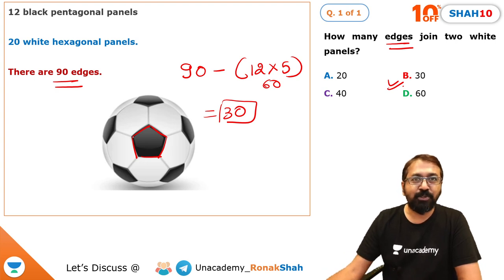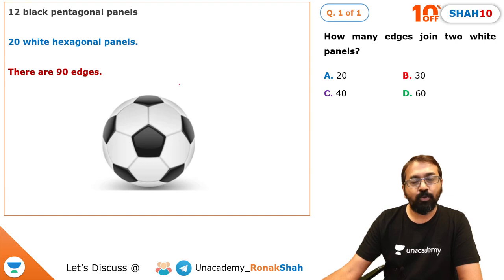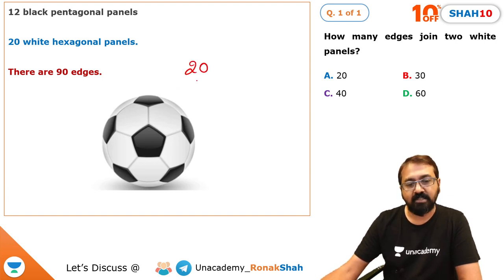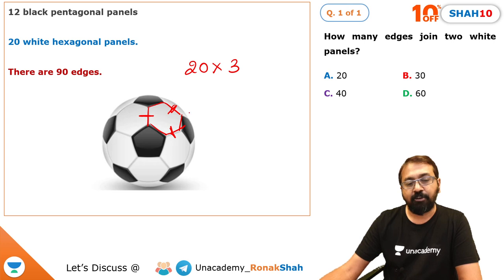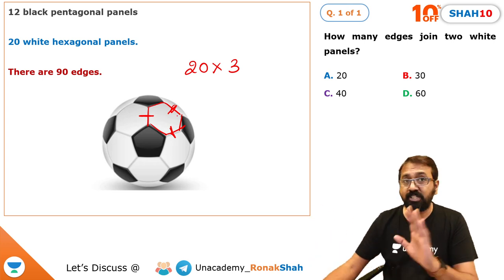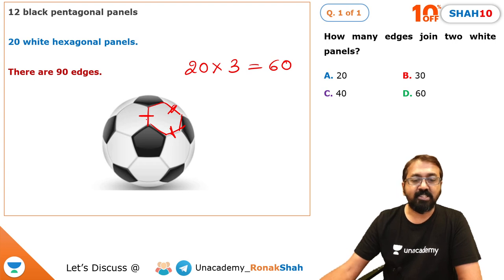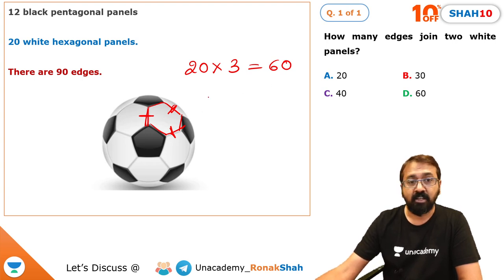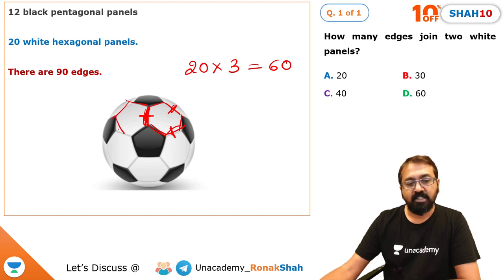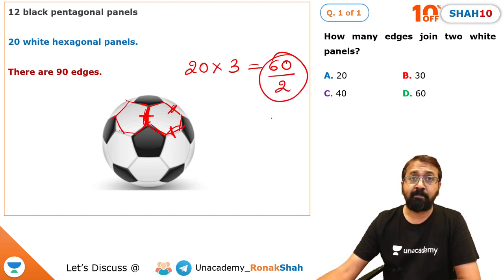The second approach: there are 20 hexagons and for each hexagon, 3 of its 6 edges are connected to white panels and the remaining 3 are connected to black pentagonal panels. So total white-adjacent edge counts are 20 × 3 = 60. However, each shared edge is counted twice — once for each adjacent hexagon — so we divide by 2, giving 60 ÷ 2 = 30.